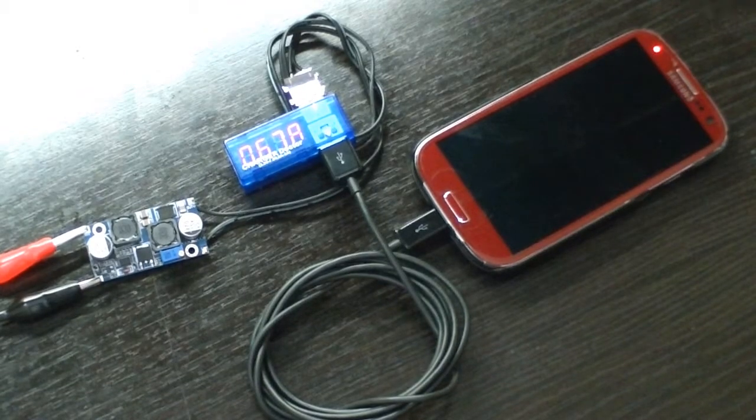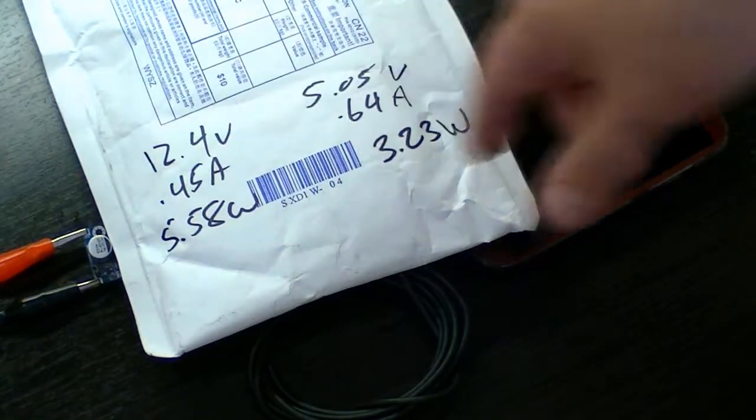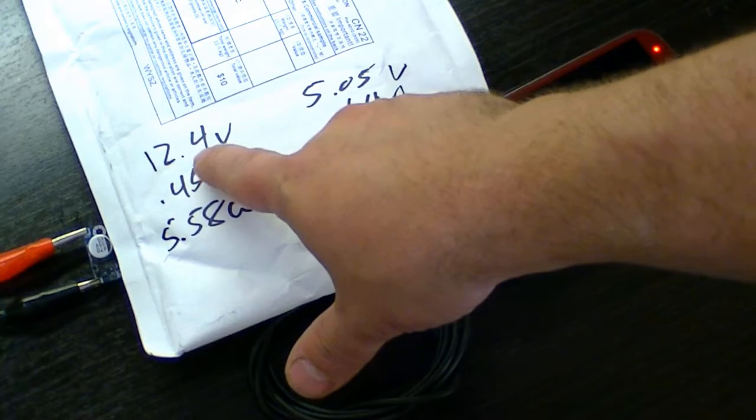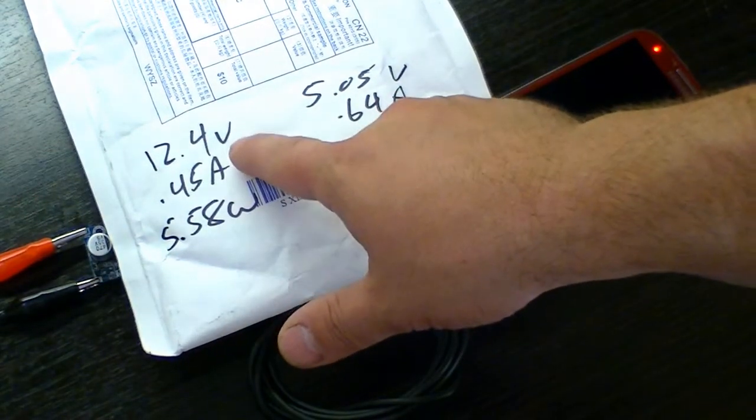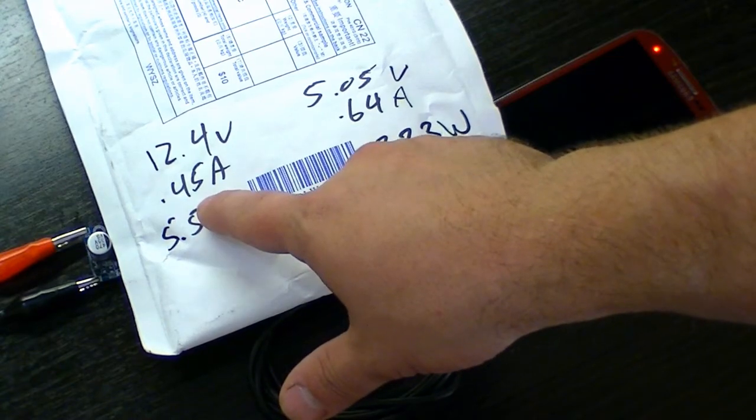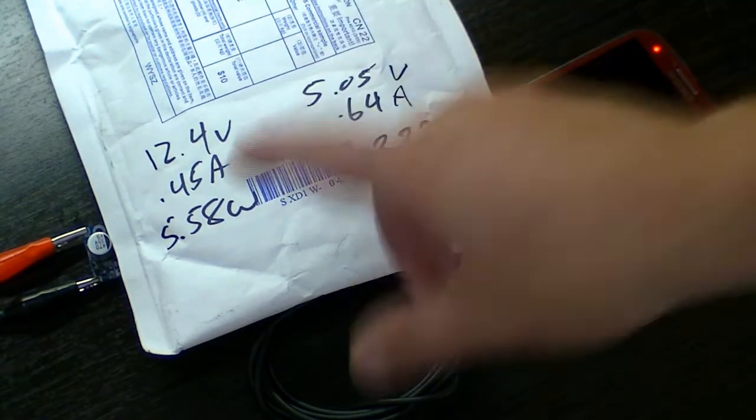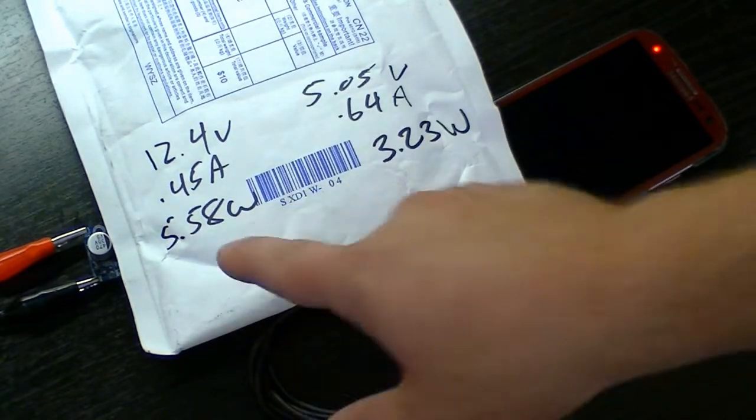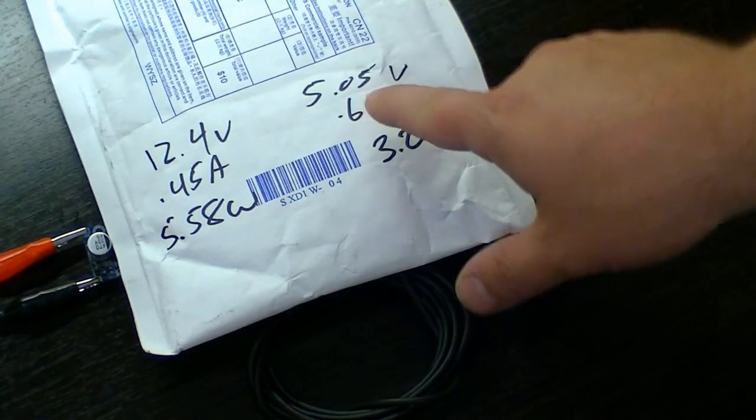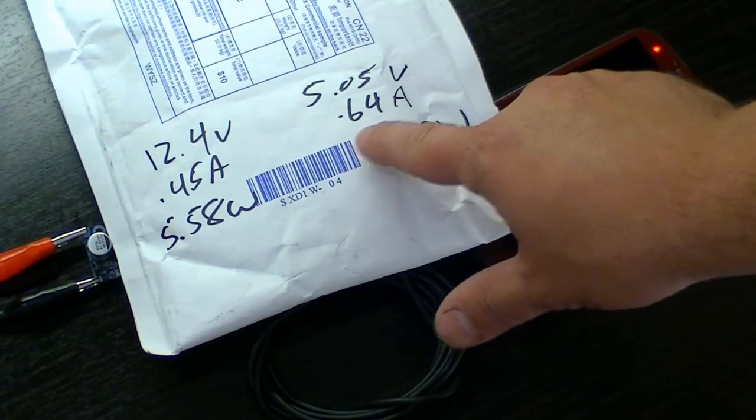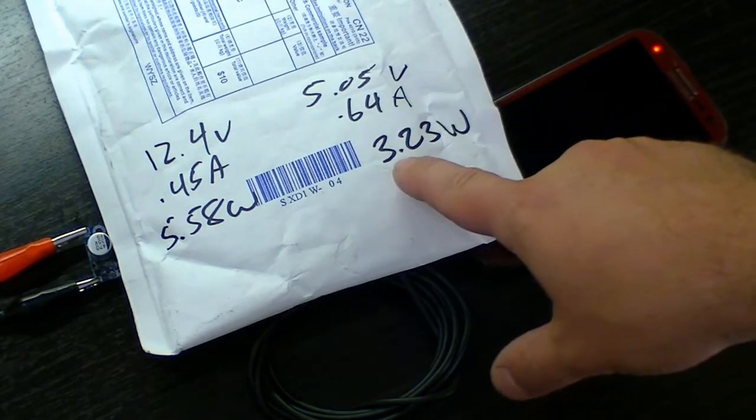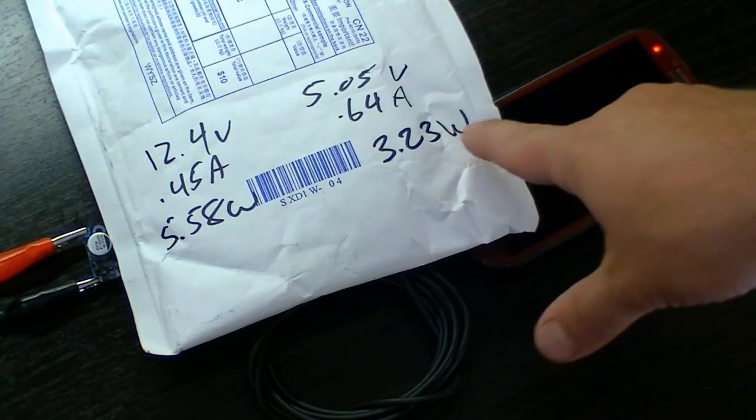Now trying to figure out the efficiency here, I did some quick little math on their envelope. I have the output on the bench top power supply set at 12.4 volts and it's currently consuming 0.45 amps, which is basically 5.5 watts. Output power as we saw was just over 5 volts at 0.64 amps, equals to an output power of 3.25 watts.